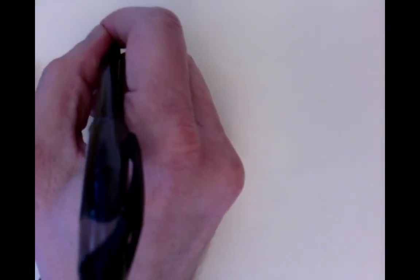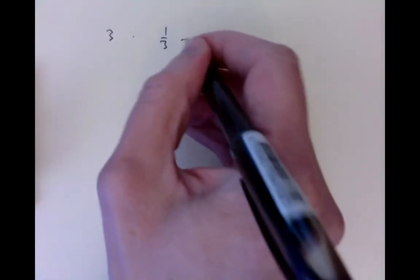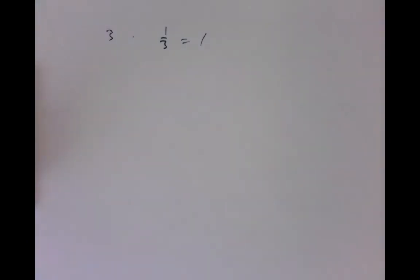The first comment to make about matrix inversion is that it's not always going to work. Whereas when we work with numbers, every number like 3 has a reciprocal like 1/3, and when you multiply them together, you get 1. But that won't always work with matrices, because it's not always possible to solve this sort of equation in matrices.